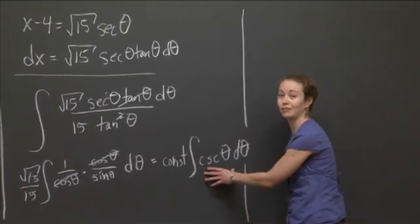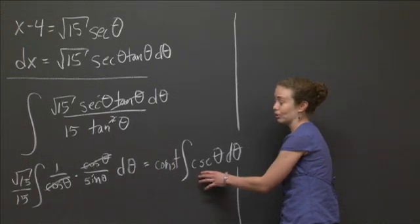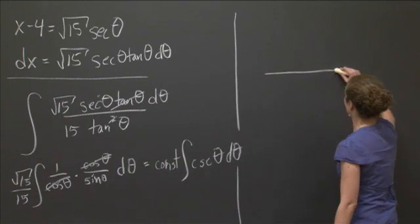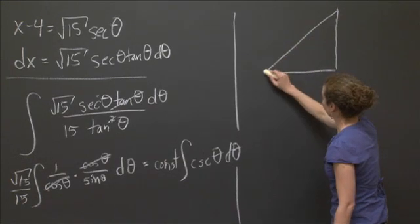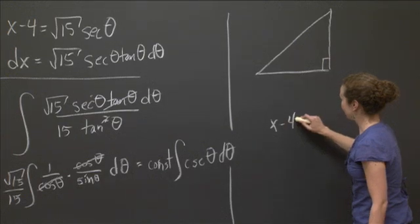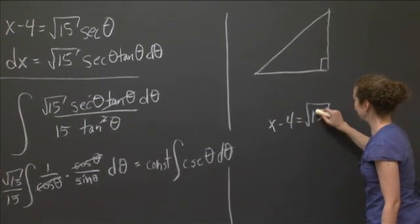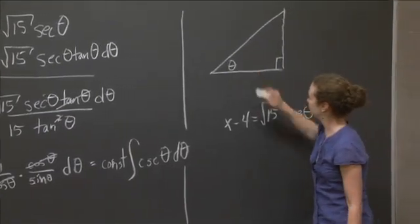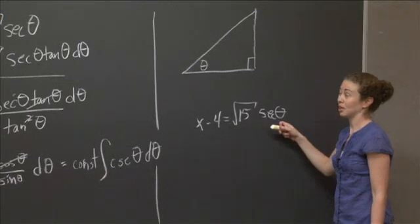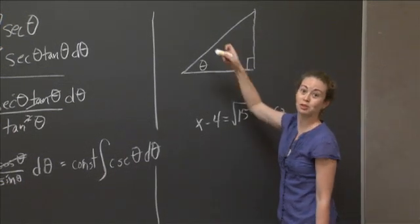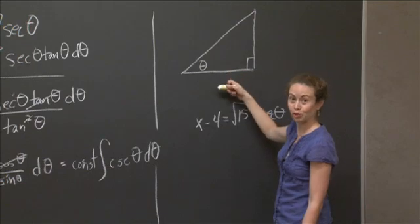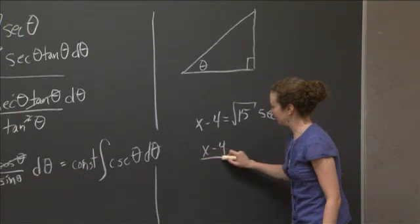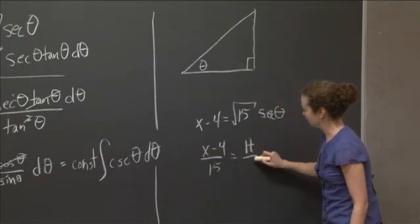So the triangle is going to come from the following thing. We know x minus 4, again, is square root of 15 secant theta. So I'm going to make this theta. Secant theta, well, it's 1 over cosine theta. Cosine is adjacent over hypotenuse. So secant is hypotenuse over adjacent. Right? That's the relationship. So x minus 4 over square root of 15 is equal to the hypotenuse over the adjacent. Did I square root? Sorry. Square root. So the hypotenuse is x minus 4. The adjacent is square root of 15.